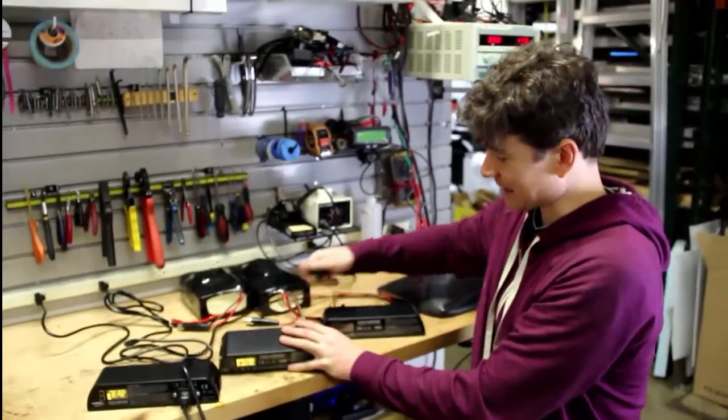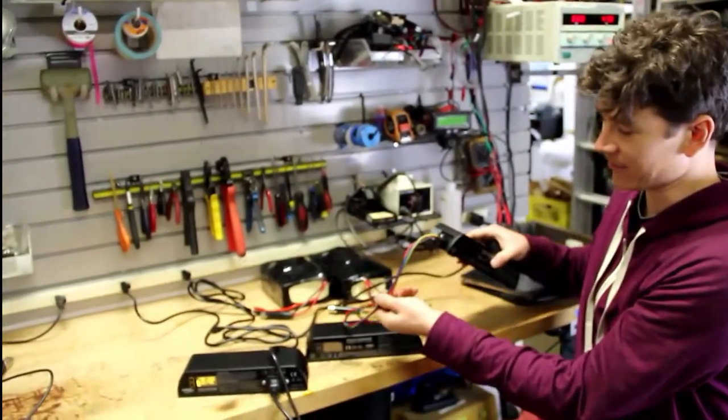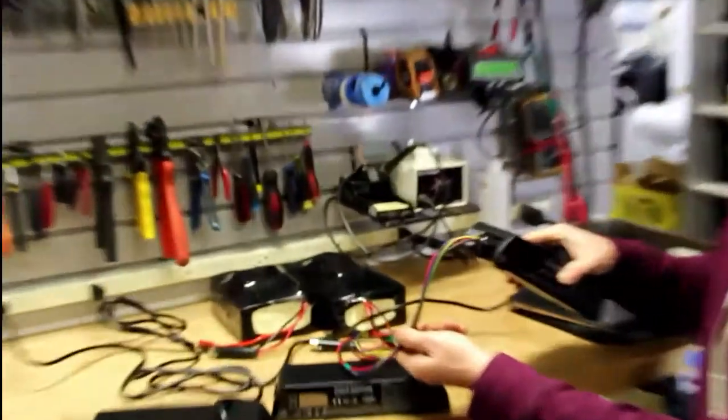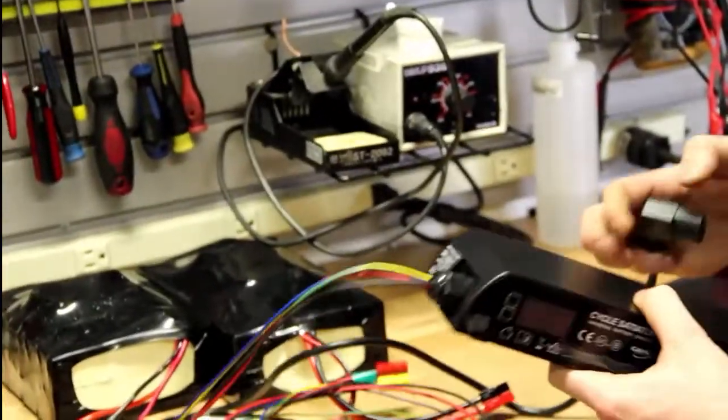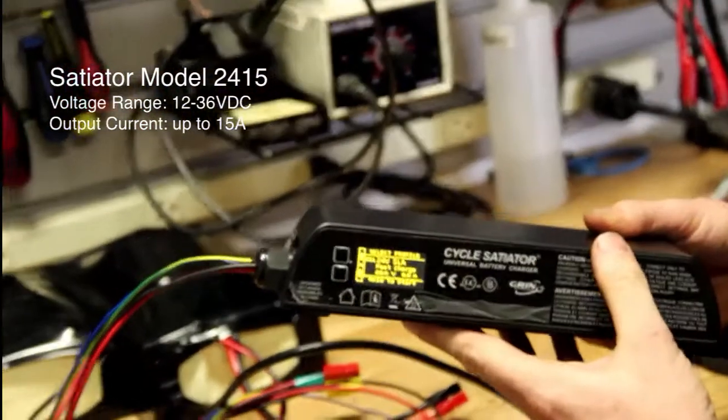The last device that I have here looks just like the 72 volt one with the AC plug on the back only on the front end of it we have a set of four discrete wires coming out of it. And that's because this satiator, if you look on the boot screen, says 24 volts 15 amps.